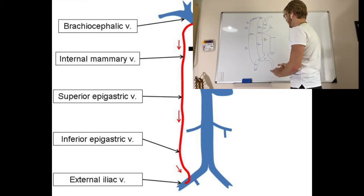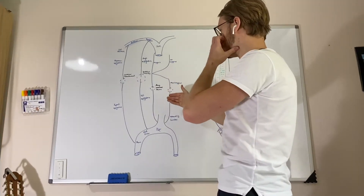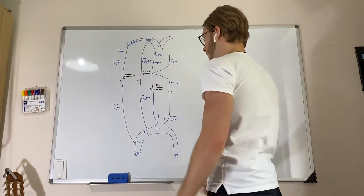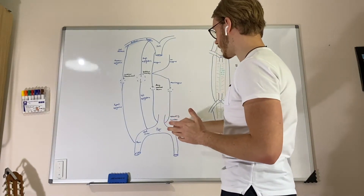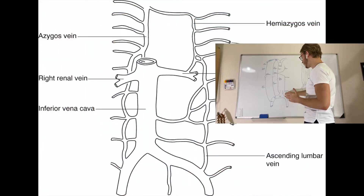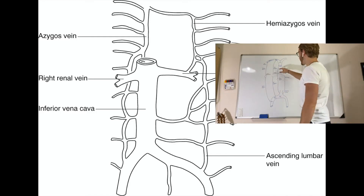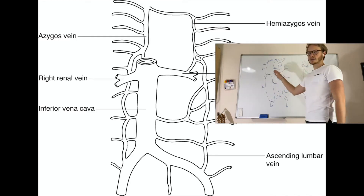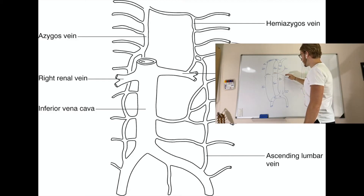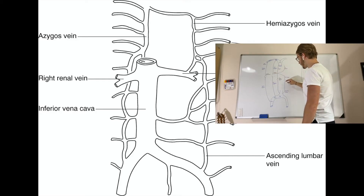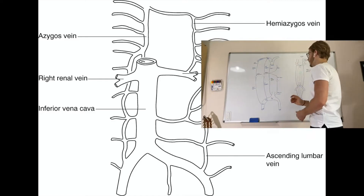The third caval-caval anastomosis is along the vertebral column, running up alongside it. It is formed by the ascending lumbar veins on both sides coming from the IVC, and the azygous and hemiazygous veins on the SVC side. The hemiazygous vein and the azygous vein anastomose with both the left and right ascending lumbar veins.